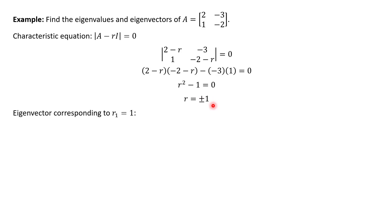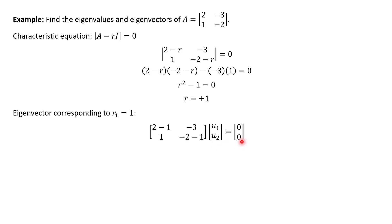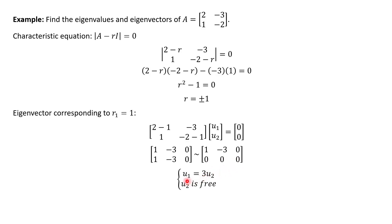Now we want to find the eigenvectors corresponding to those eigenvalues, one at a time. For the eigenvector corresponding to positive one, we plug into our equation A minus rI times vector u equals zero. In this case r is one, so we're just subtracting one in the diagonals. We make this an augmented matrix and reduce it. Notice we end up seeing that the second row is all zeros. This translates as u1 equals three times u2, and u2 is free — it's our free variable.